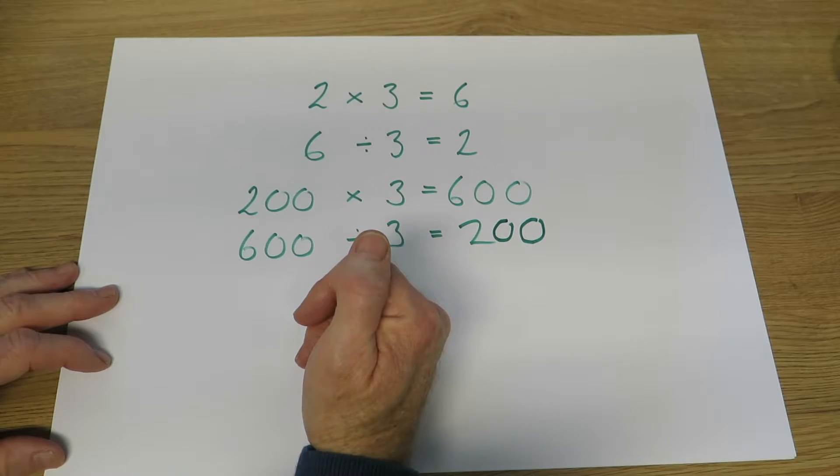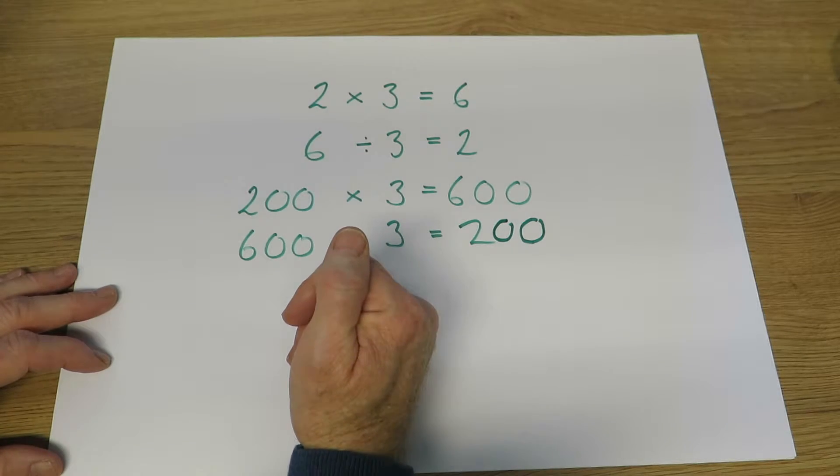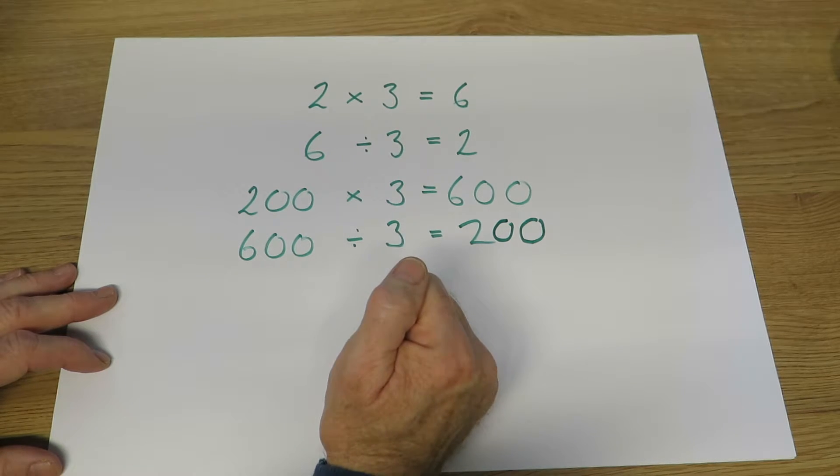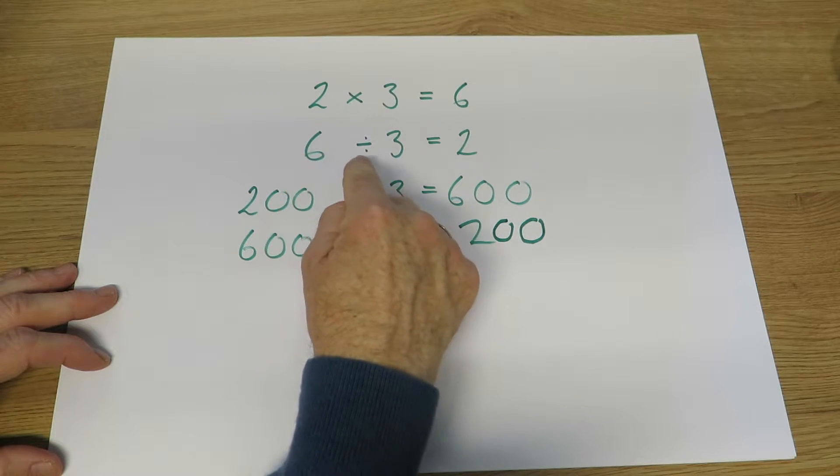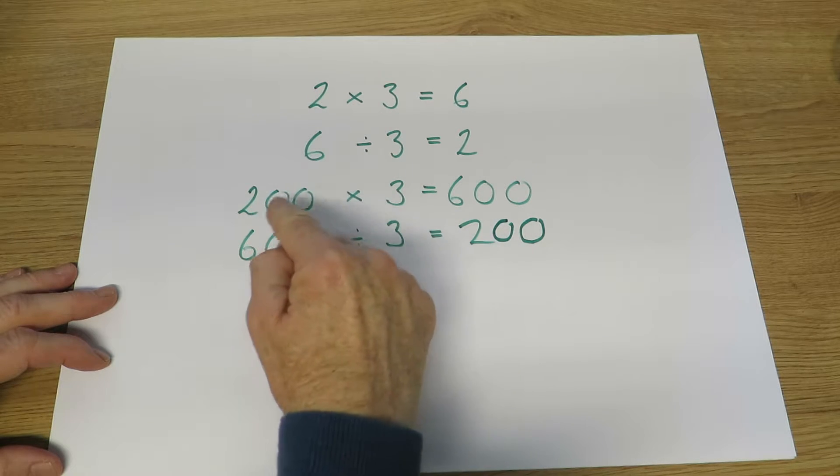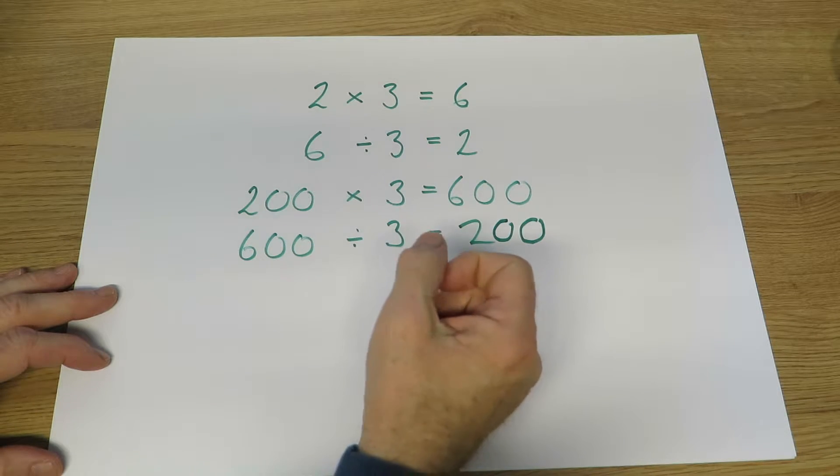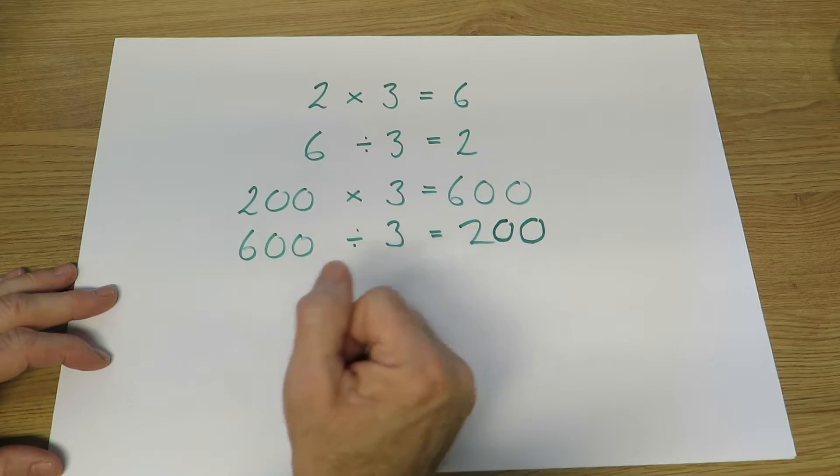In their mental work, they will extend their skills to solve questions such as 600 divided by three, knowing that because two times three is six, then six divided by three must be two, and 200 times three must be 600, so 600 divided by three must be 200.